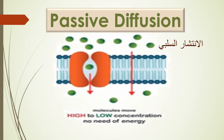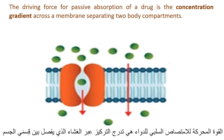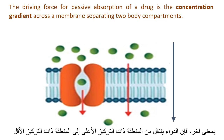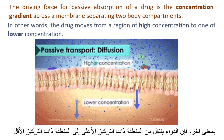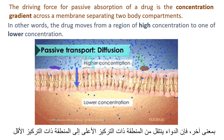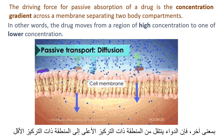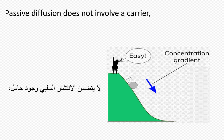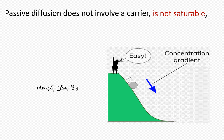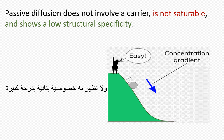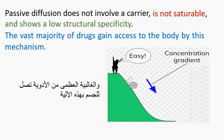Passive diffusion. The driving force for passive absorption of a drug is the concentration gradient across a membrane separating two body compartments. In other words, the drug moves from a region of high concentration to one of lower concentration. Passive diffusion does not involve a carrier, is not saturable, and shows a low structural specificity. The vast majority of drugs gain access to the body by this mechanism.